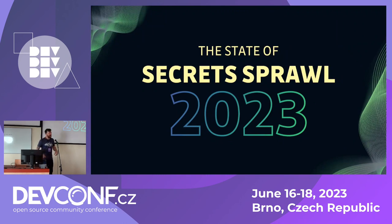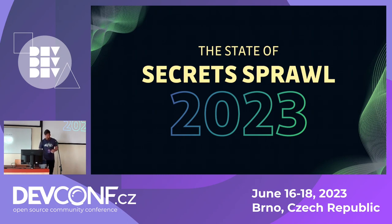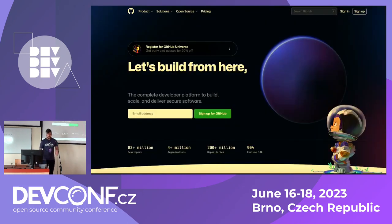I work for a company called GitGuardian, and each year we publish a report called the State of Secret Sprawl. This is basically looking at different areas that we've monitored to try and find leaked credentials. The number one place that we look is GitHub — this is the largest contribution place for source code.